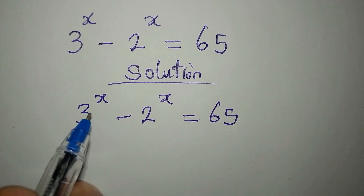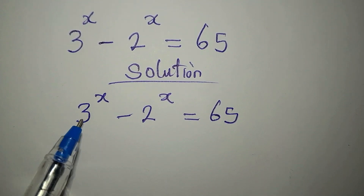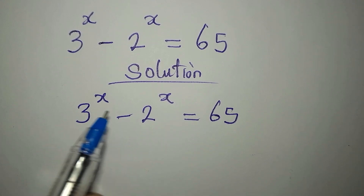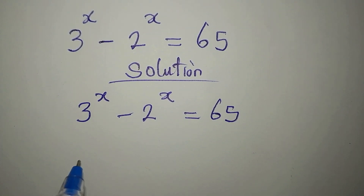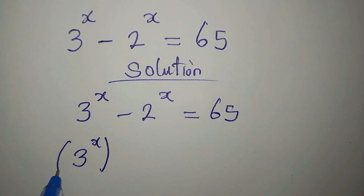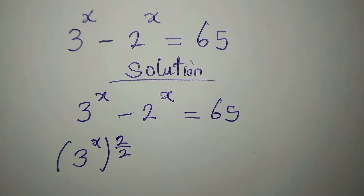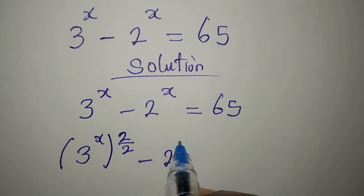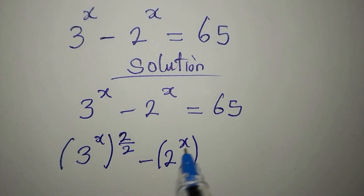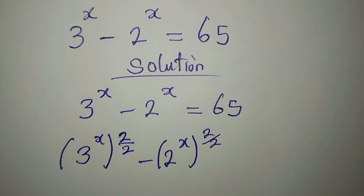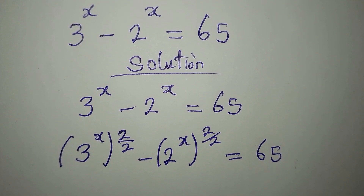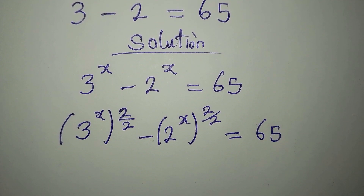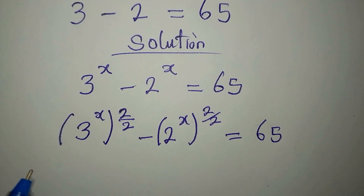To do that, I will raise this to the power of 2. This is 3 to the power of x, to the power of 2 over 2, so that I can manipulate and have something raised to the power of 2. Then minus 2 to the power of x, still with 2 over 2, and this equals 65. This has not changed anything.